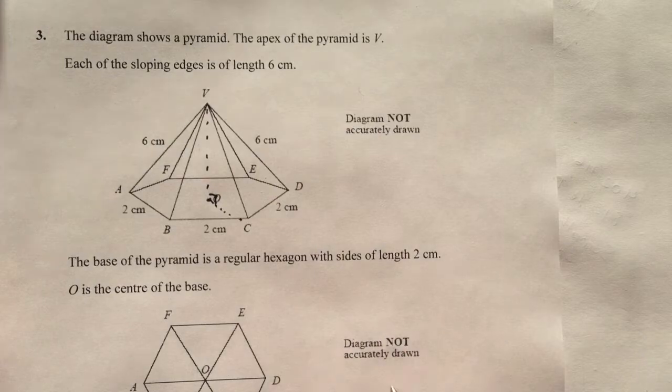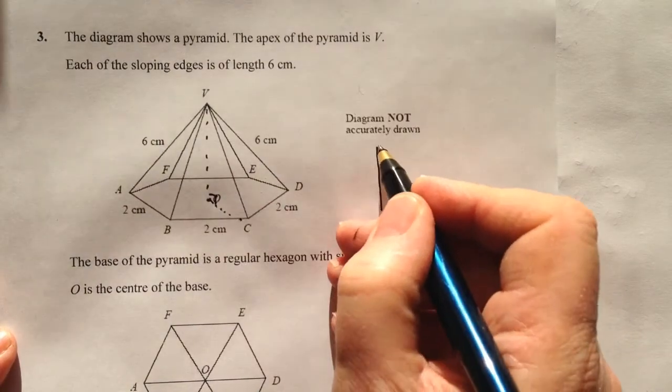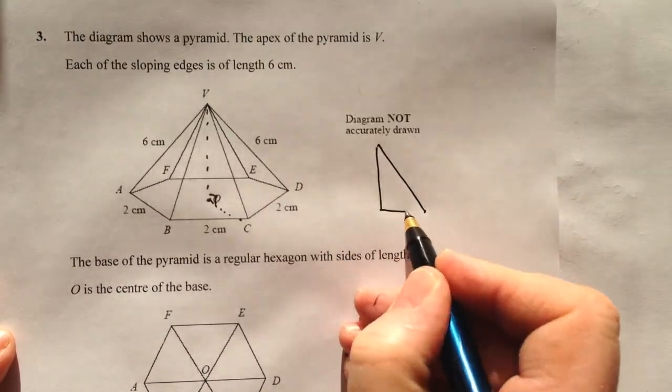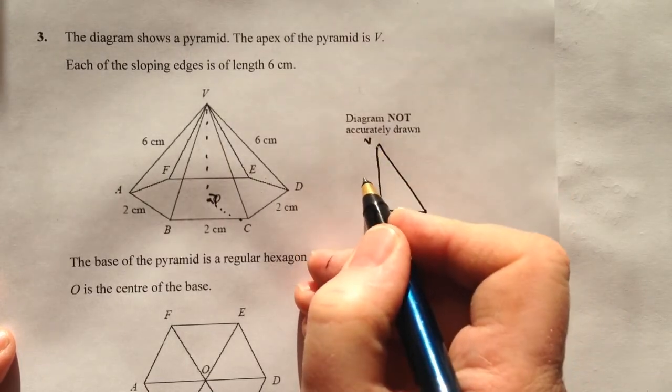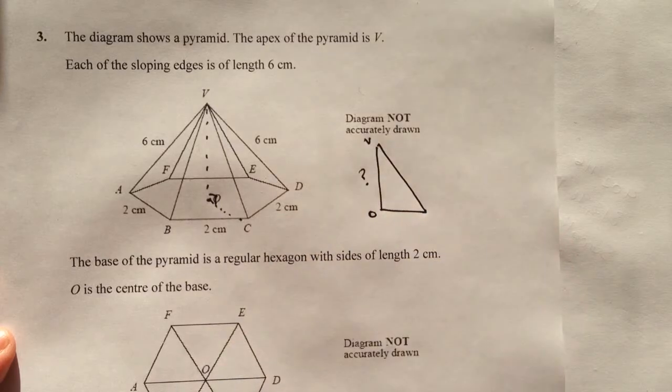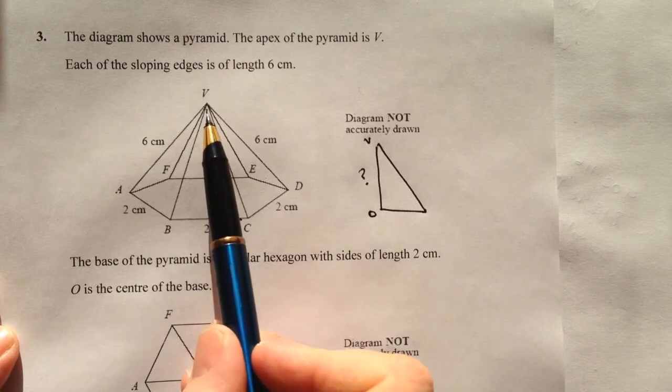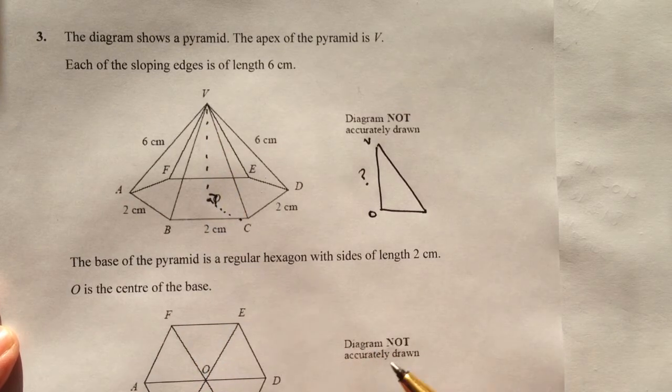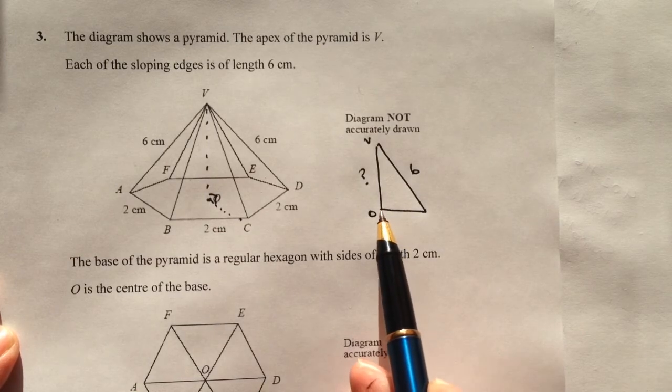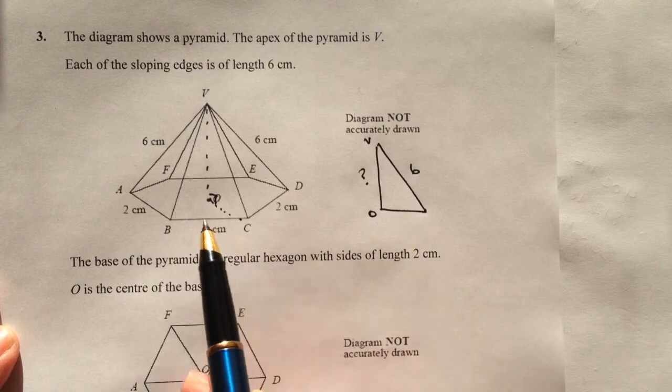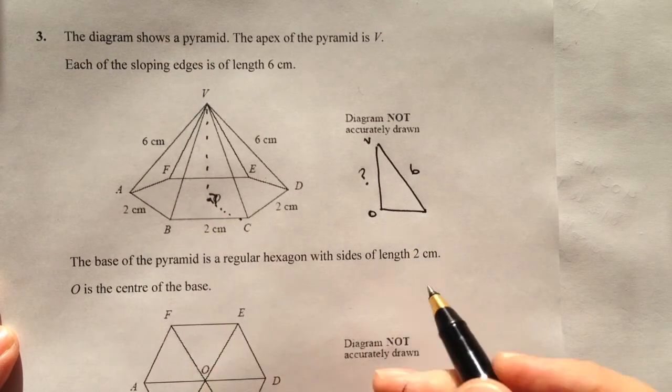So if I just draw that out for you, what we're looking to actually figure out is that if we have a right angle triangle where the bottom here is O and the top is V, that's what they're asking us to find out. What we do know is that the slant height as it's called, which is this dimension along here, is 6 centimetres. The only thing we need to do is find out this dimension along here which they have as O to C.